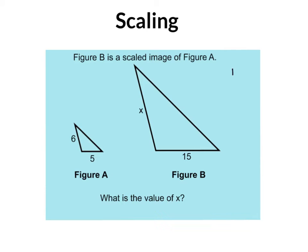So I'm going to start a ratio table. I'm going to put the corresponding sides, or the sides that are in the same position in the triangle. So in figure A, I have 5 and that corresponds to the 15 in figure B. So 5 goes with 15.